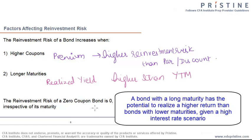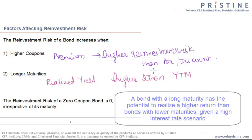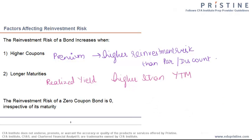If you can reinvest at higher interest rates compared to that of a bond with lower maturity. The reinvestment risk of a zero-coupon bond is zero, irrespective of its maturity. This point is very important with respect to the exam.